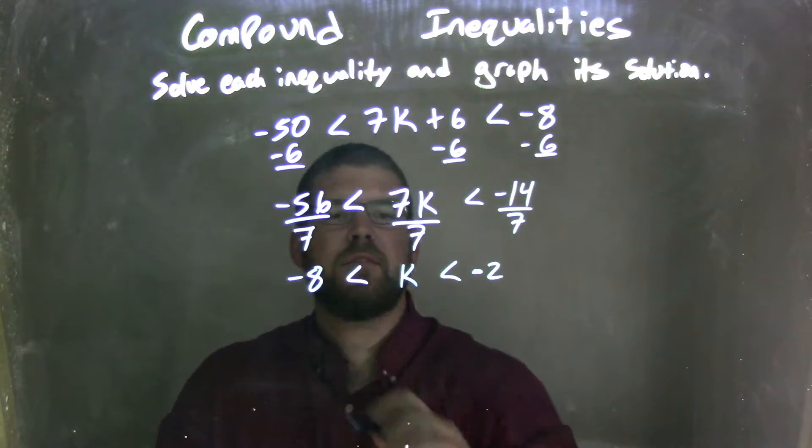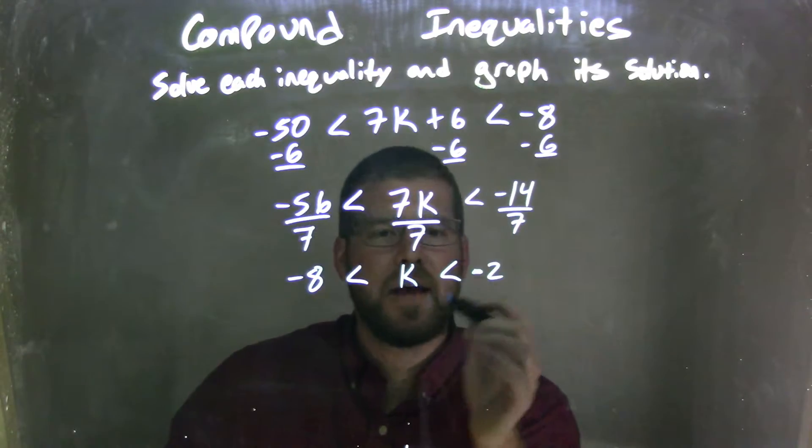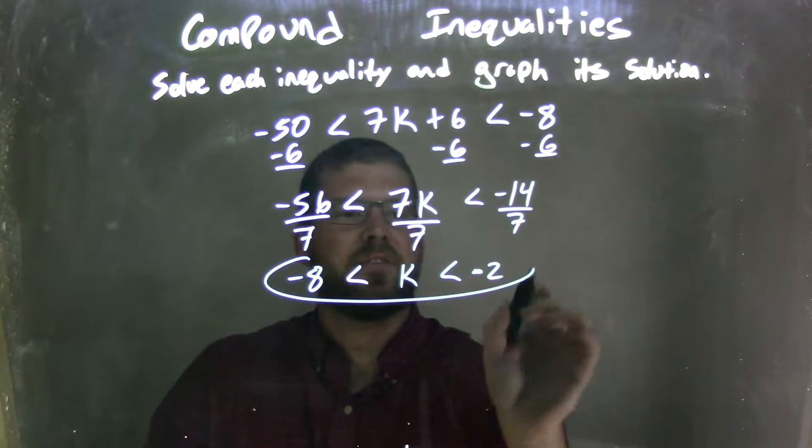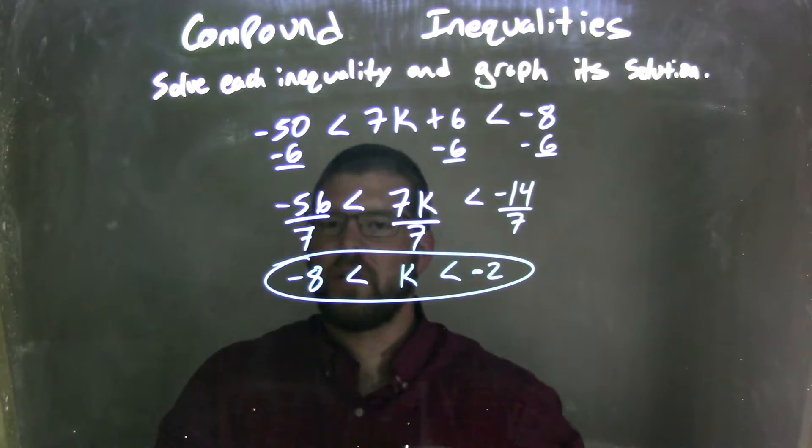So now we have negative 8 is less than k, which is less than negative 2. Fantastic — that's our final answer.